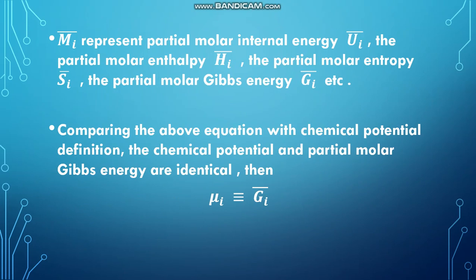Here Mi bar represents different properties like partial molar internal energy Ui bar, partial molar enthalpy Hi bar, partial molar entropy Si bar, and partial molar Gibbs energy Gi bar. Comparing the above equation with the chemical potential definition, the chemical potential and partial molar Gibbs energy are identical, so Mu i becomes identical to Gi bar.